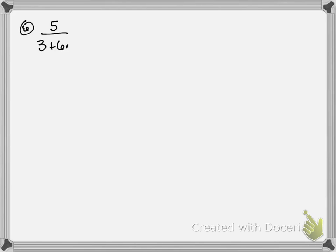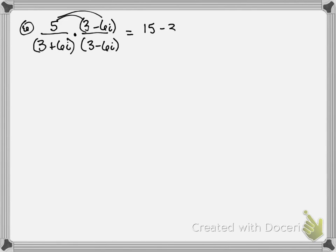Here's 6 — you've got 5 over 3 plus 6i. So if you guys remember when we had division of these complex numbers, what we ended up having to do is we had to multiply by what's called the conjugate of this, which is the opposite. So we get 3 minus 6i over 3 minus 6i. That's going to get the middle parts to cancel, just like the problem we did before. So this is 5 times 3 is 15, 5 times negative 6i is negative 30i — all over — 3 times 3 is 9, 3 times negative 6i cancels out with 3 times positive 6i.